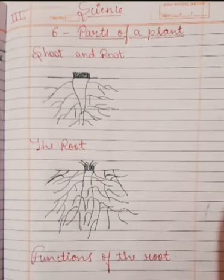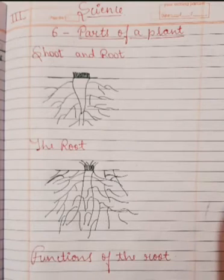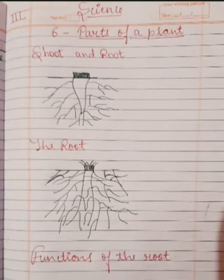First is shoot and root. The shoot is that part of a plant which grows above the ground, and the root is that part of a plant which grows below the ground. The part which grows above the ground is called the shoot, and the part which grows below the ground is called the root.